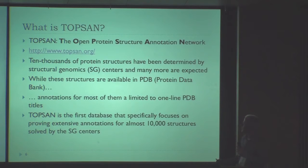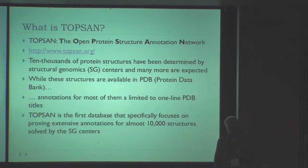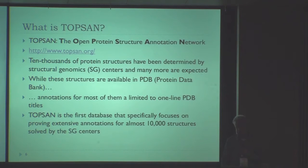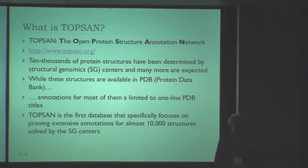You can see the website here if you want to look at it. The use case for TOPSEN is that, as you may or may not know, there is not only high-throughput sequencing — there's also high-throughput production of protein 3D structures, called structural genomics. These centers — there are maybe 3 or 4 in the United States — have already produced more than 10,000 protein structures.